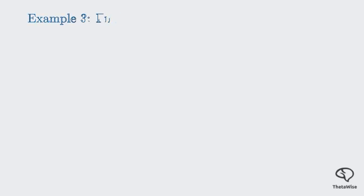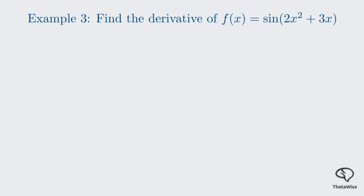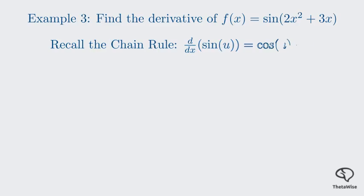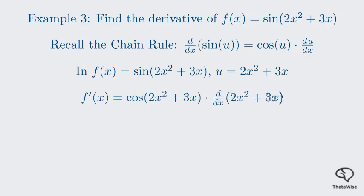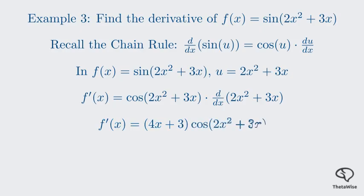For our third pattern recognition example, let's look at another derivative: f(x) = sin(2x² + 3x). What pattern does this fit? It's a sine function, but its argument isn't just x — this screams chain rule. The derivative of sin(u) is cos(u) × du/dx. We need to identify our u; here it's 2x² + 3x. Following the rule, the derivative will be cos(2x² + 3x) times the derivative of 2x² + 3x. The derivative of 2x² + 3x is 4x + 3. So the final derivative is (4x + 3)cos(2x² + 3x).